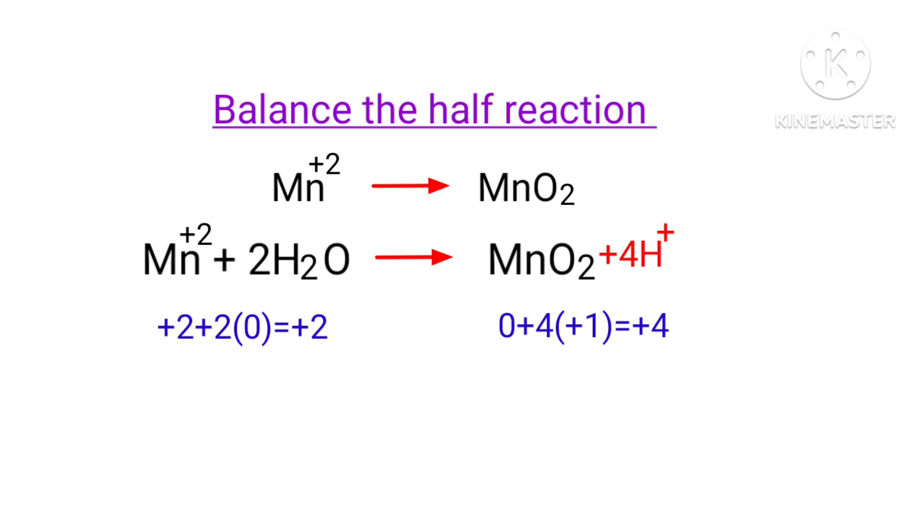On the left hand side, the sum of charges is +2 + 2(0) = +2. On the right hand side, the sum of charges is 0 + 4(+1) = +4. So both sides are not equal.